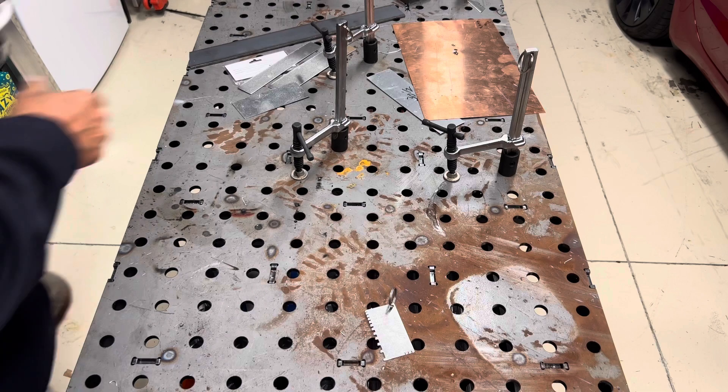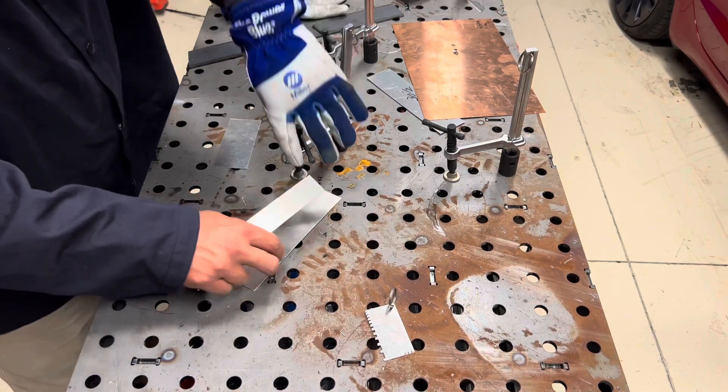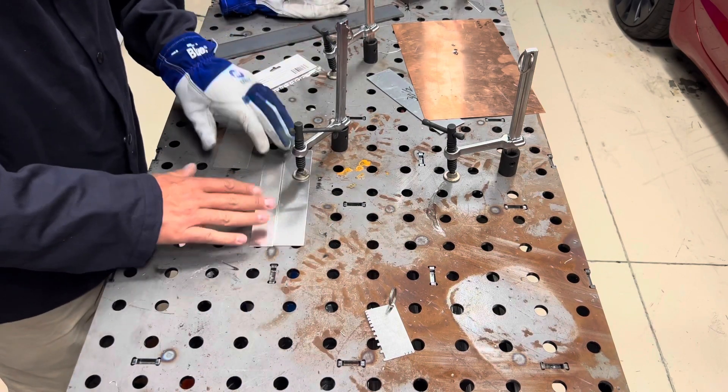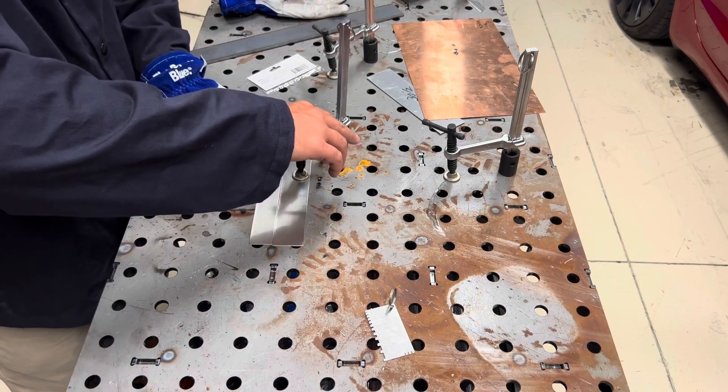So this is our setup. We've got two pieces of 20-gauge here. That we will put together like so. We'll clamp the one side and I'll tack it to it.